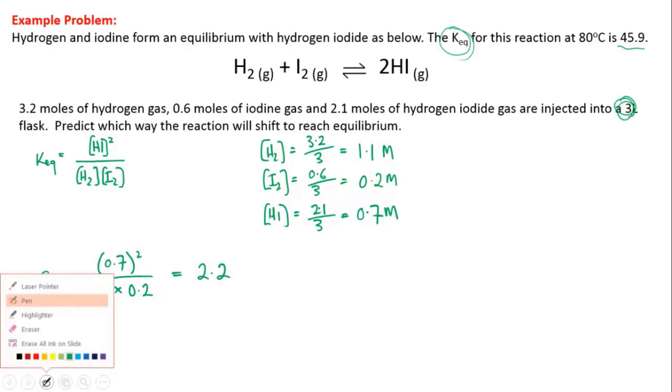Okay, so clearly, in this case, our Q being 2.2 is less than our Keq, which was 45.9. Now, let's have a look at the equilibrium expression. If Q is less than Keq, if the values that I put in are less than Keq,